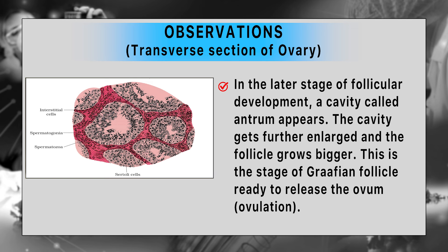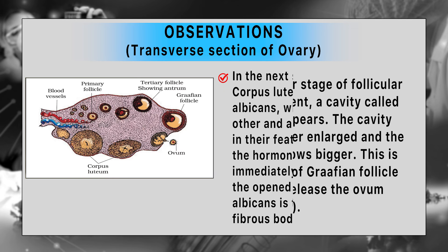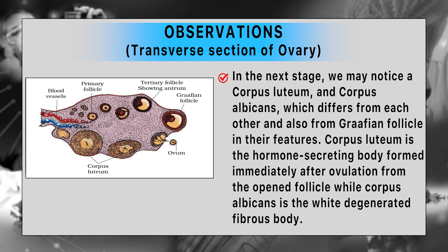This is the stage of the Graafian follicle, ready to release the ovum — this is nothing but ovulation. In the next stage, we may notice a corpus luteum and corpus albicans, which differ from each other and also from the Graafian follicle in their features. Corpus luteum is the hormone-secreting body formed immediately after ovulation from the open follicle, while corpus albicans is the white degenerated fibrous body.